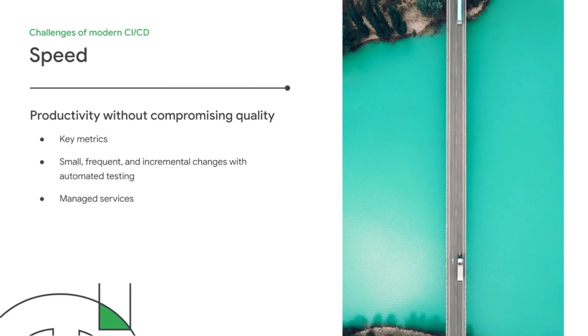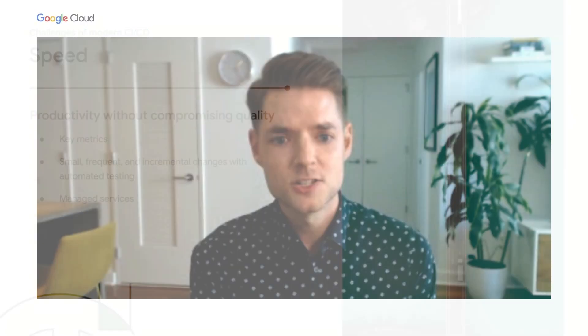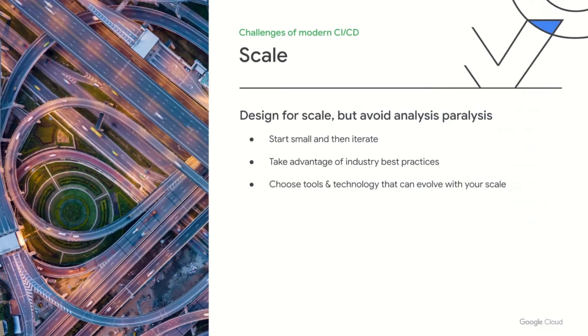And finally, it may in some cases be worth considering managed services to maximize the speed of your team. Managed services may reduce the burden of infrastructure management and security for your team, and instead let you focus on your differentiated value and goals. Next, let's talk about scale. A key thing I want to mention is that scale doesn't have to be daunting. It's okay to start small with a CI/CD pipeline that works for one or two projects, and work your way up from there. If you hyper-optimize for scale too early in a project, you may pose an unnecessary risk to your team's velocity at a point in time where velocity is an important factor.